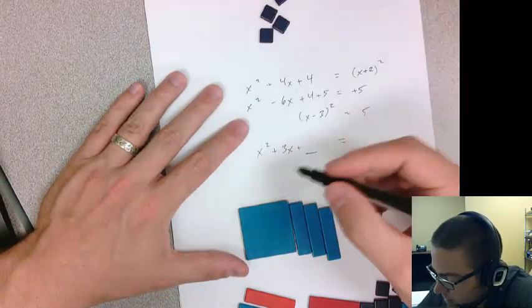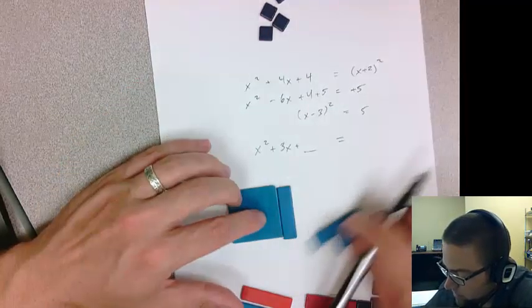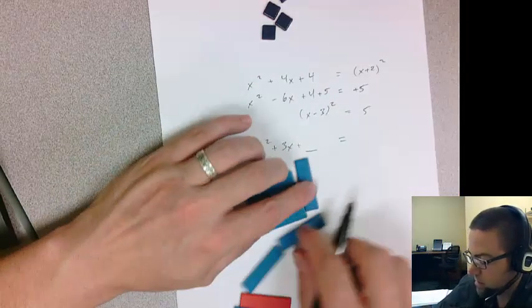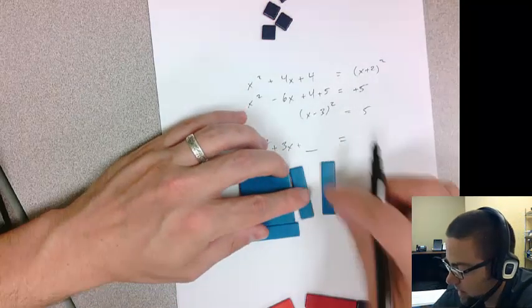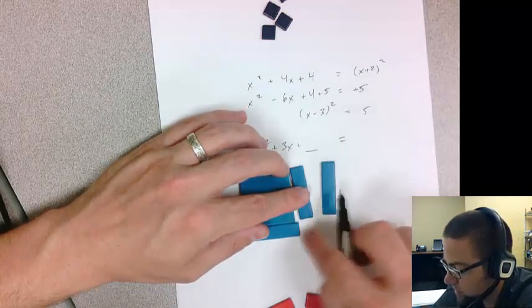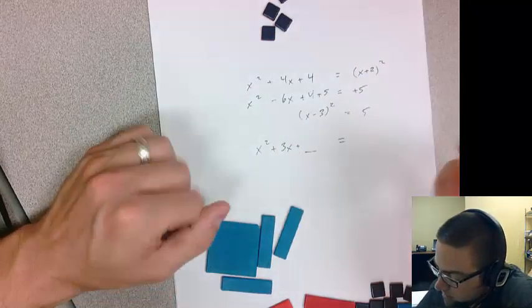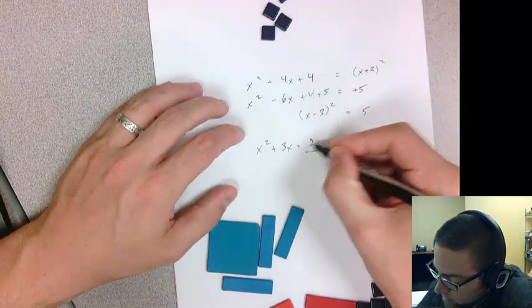it would just be half of it, so 1 and a half. Then I would square that—1 and a half squared to get how many squares. 1 and a half times 1 and a half, or 3 halves squared, would be 9 fourths.